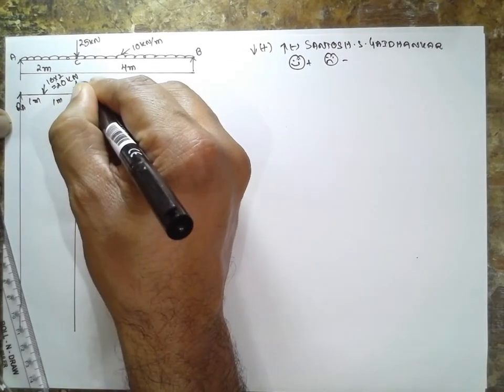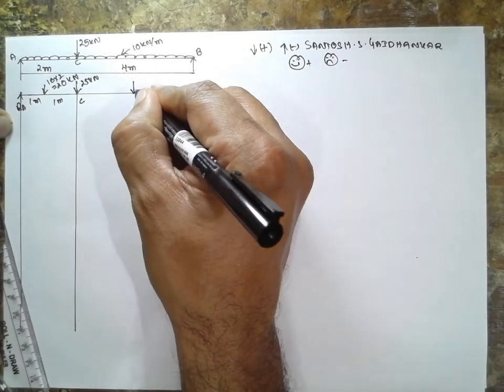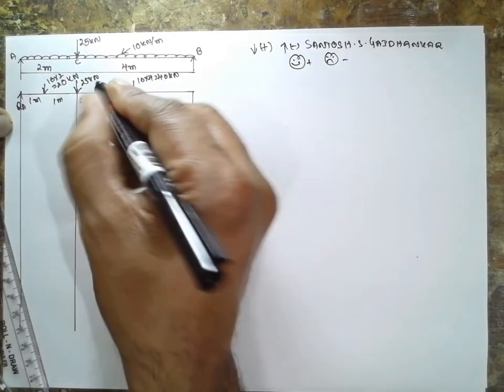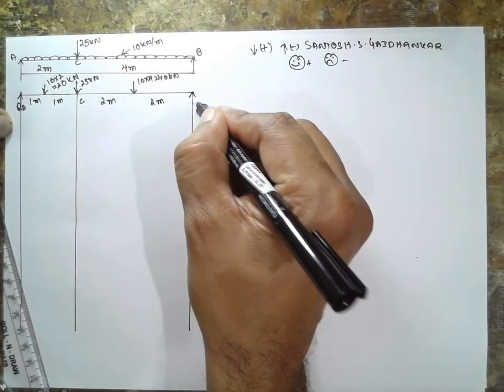This is load acting here 25 kilonewton at C, exactly at the center. 10 into 4, it is 40 kilonewton, 2 meter this side and 2 meter this side, this is RB.